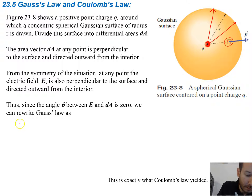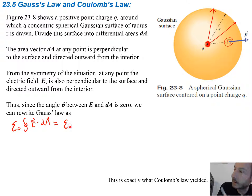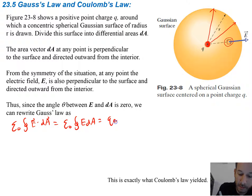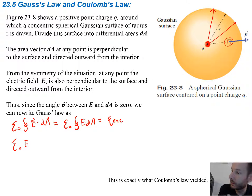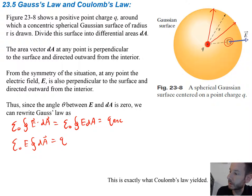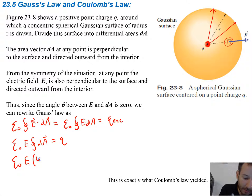Looking at our equation for Gauss's law: ε₀ times the integral of E·dA equals ε₀ times the integral of E dA, since the angle is zero we get rid of the dot, and that equals the enclosed charge. Now we can start simplifying this integral. ε₀ times E times the integral of dA equals Q, and the integral of dA is just the area. The area of a sphere is 4πr², so we get ε₀ times E times 4πr² equals charge Q.